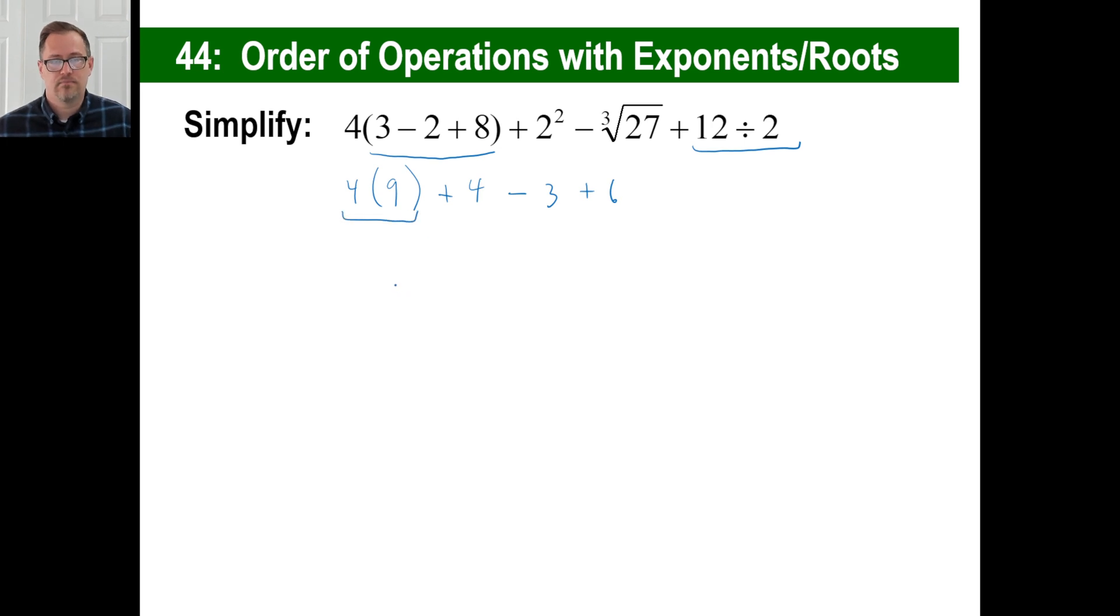We forgot about those parentheses, didn't we? That's 36 plus four minus three plus six. You can just go left to right or combine them any way you want. It doesn't matter. How about this? Four plus six is 10. 10 minus three, seven. 36 plus seven, 43. There you go.